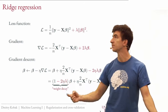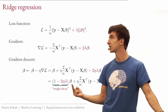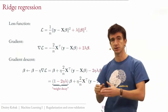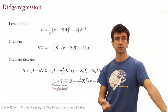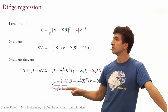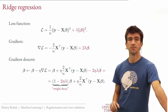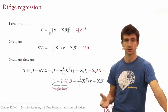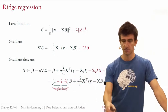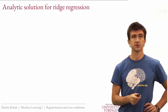That's the gradient descent for ridge regression. We can also find an analytic solution by setting the gradient to zero at the optimum. Dividing by two and rearranging, we can isolate β-hat. The trick is to write the identity term as a matrix — λ times the identity matrix — and collect everything into one expression. This gives us the analytic solution: β-hat = (X^T X + nλI)^{-1} X^T y.